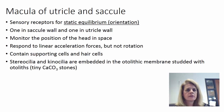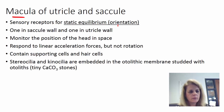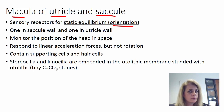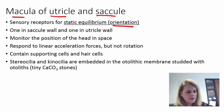These dense areas of receptors are called the macula, when you're talking about static equilibrium or orientation. They are found in the utricle and the saccule — these are the sensory receptors for orientation found in those two chambers of the vestibule.